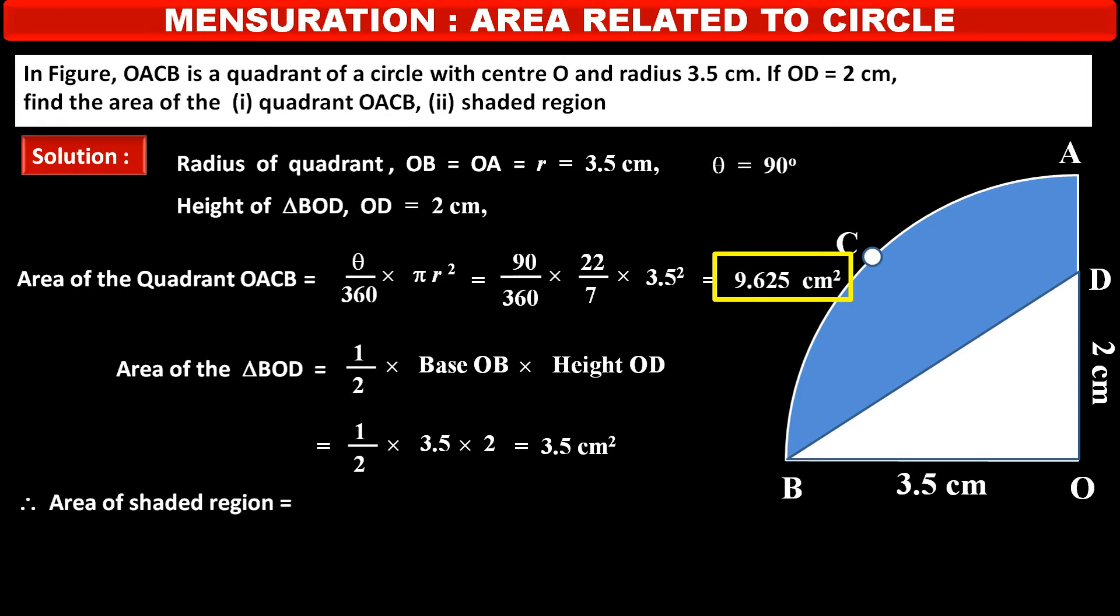Therefore, area of shaded region is equal to area of quadrant OACB minus area of triangle BOD, which is equal to 9.625 cm square minus 3.5 cm square, which equals 6.125 cm square. This is the required area of shaded region.